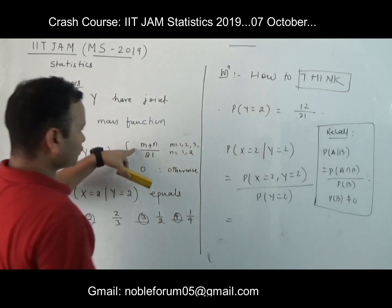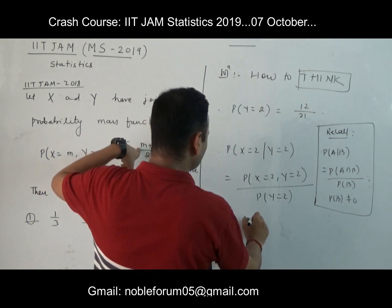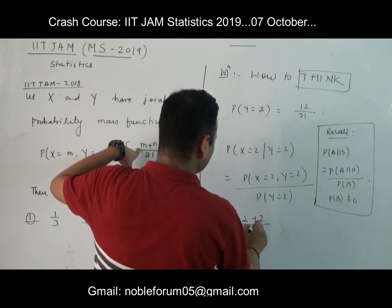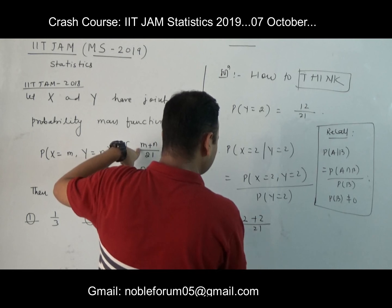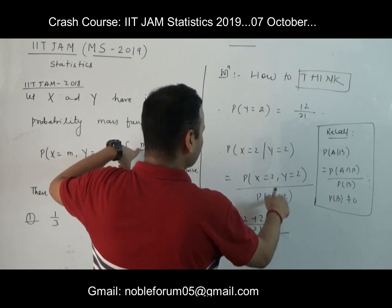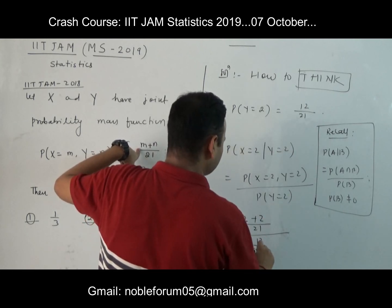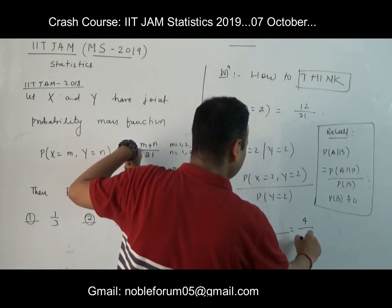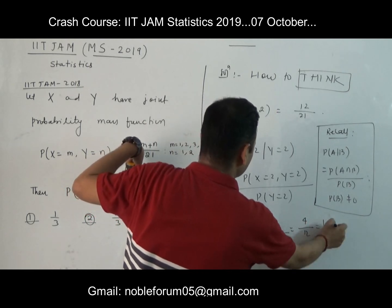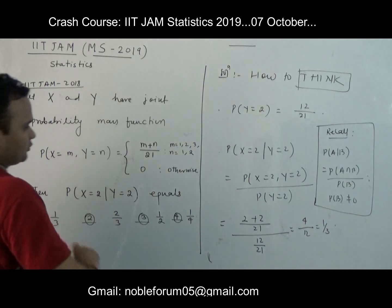What is probability of X equal to 2 given Y equal to 2? Everything is given so nicely: 2 plus 2 by 21, divided by probability of Y equal to 2, which we already calculated as 12 by 21. So this is 4 by 12, and that is nothing but 1 by 3. So the answer is 1 by 3.